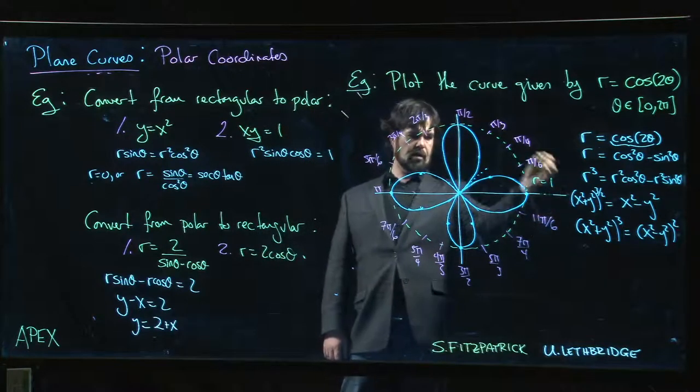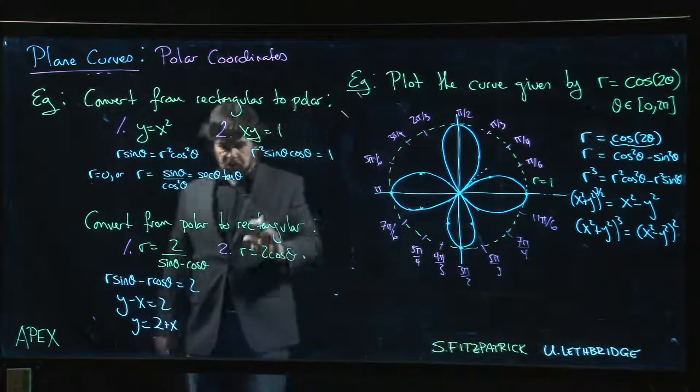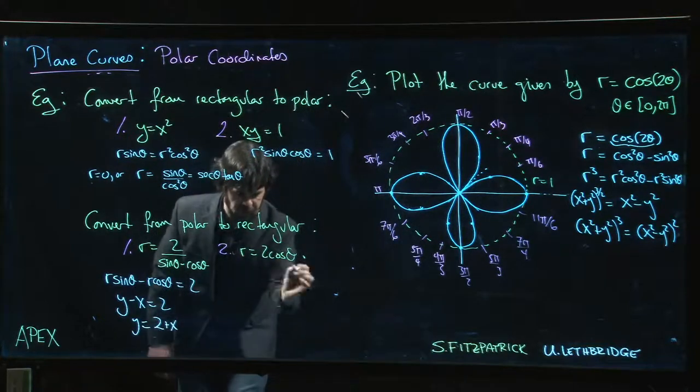We can actually explicitly see that it's a circle. The trick that you do is multiply both sides by r. Why? Because on the right, that gives me r cos θ, which I can recognize as x.